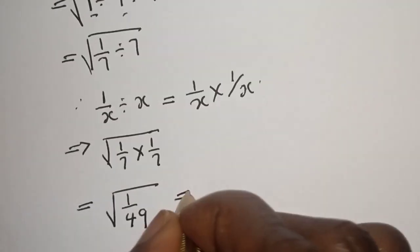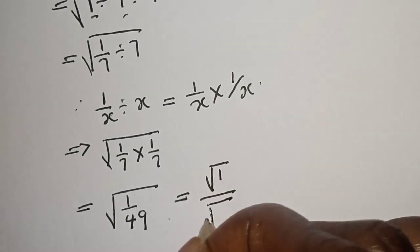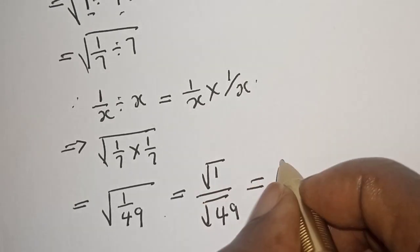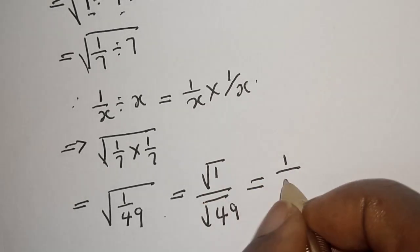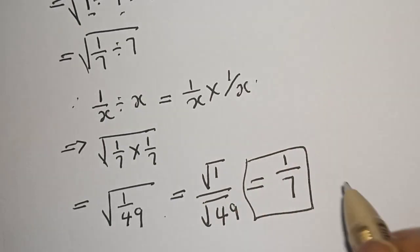Then this is equal to square root of 1 divided by square root of 49. This is equal to 1 over 7. And this is the final answer.